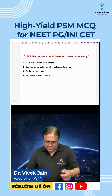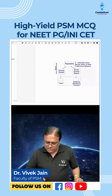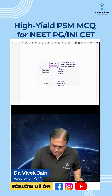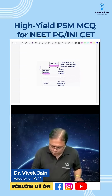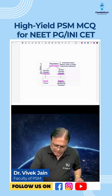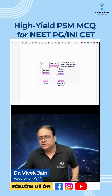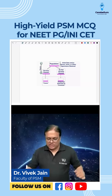Question 18, which we have just discussed: which is not a feature of a nested case control study? This is the design of a nested case control study. Take a population, go forward for many years. When disease develops, those are cases. From the other people, select controls, then come back in the backward direction to compare their history, blood samples, or any other data. It is a small case control study nested in a big cohort study.